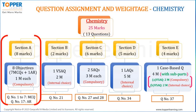Now, let us see question assignment and weightage for the sub-subject chemistry in this whole science paper. The total weightage for chemistry would be 25 marks distributed among a total of 13 chemistry questions which are compulsory.